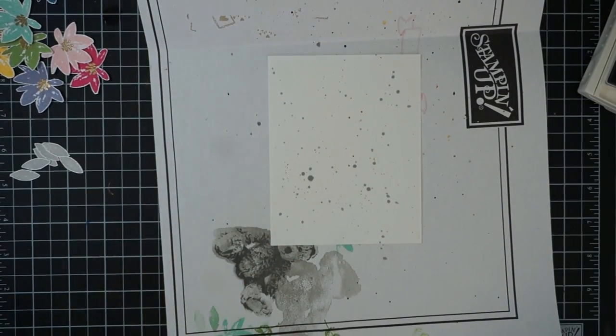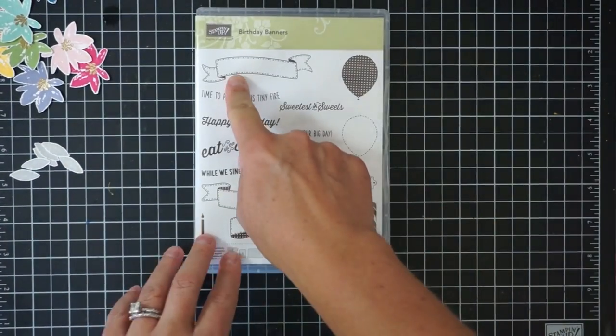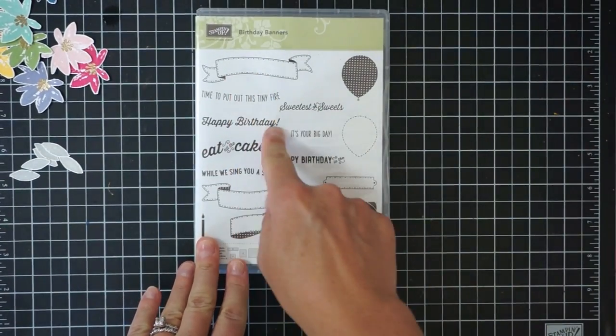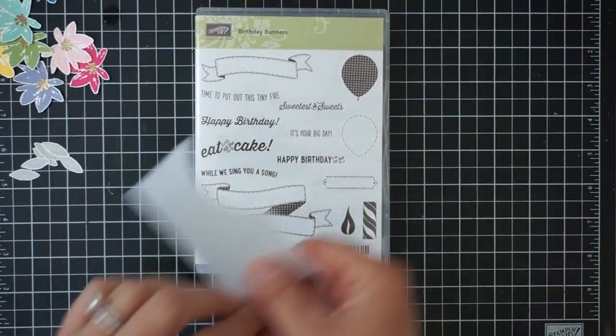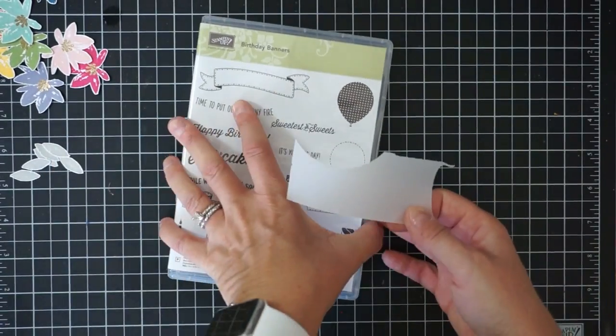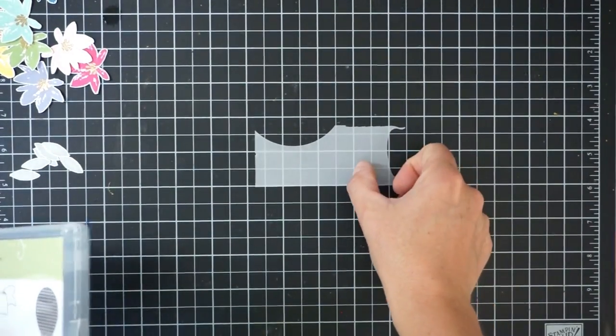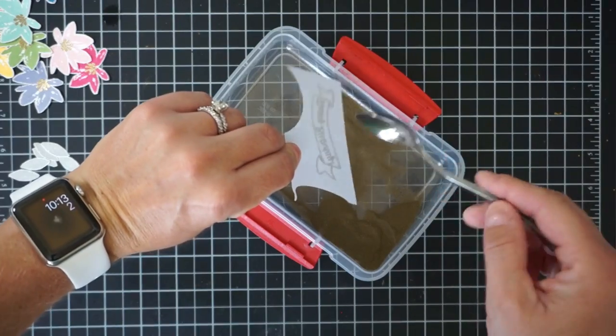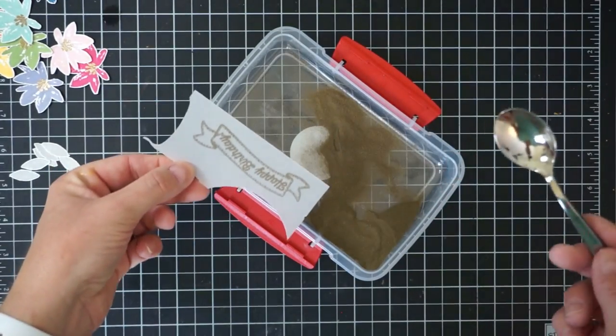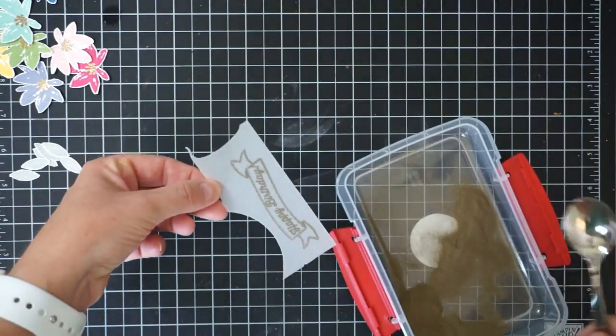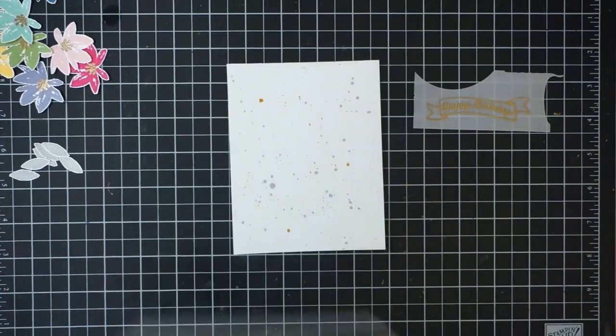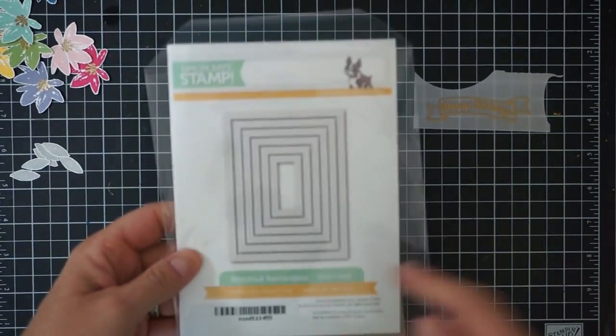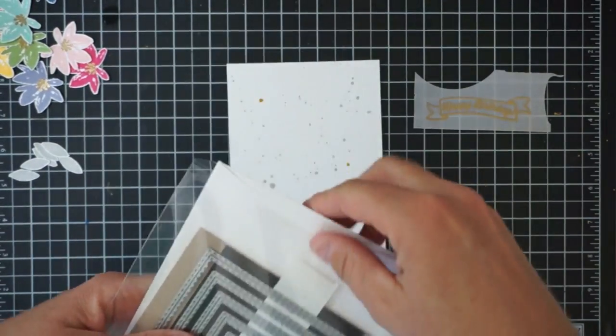Now I'm going to work on the sentiment. I've got this Birthday Banners stamp set and a piece of vellum. I'm going to stamp the banner and the Happy Birthday onto this piece of vellum, apply some gold embossing powder, heat set that with my heat tool, and then that sentiment will be ready to go.